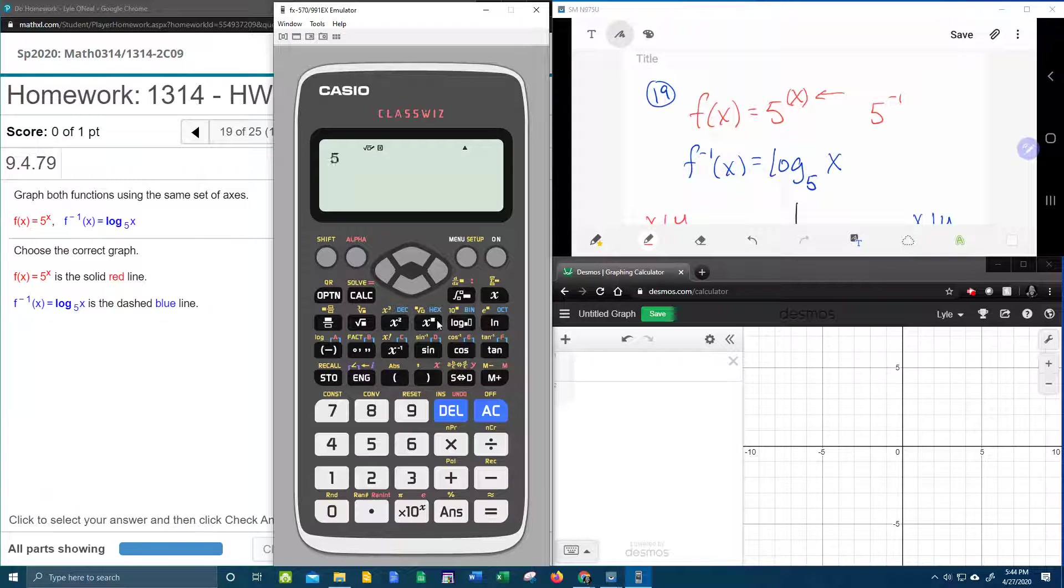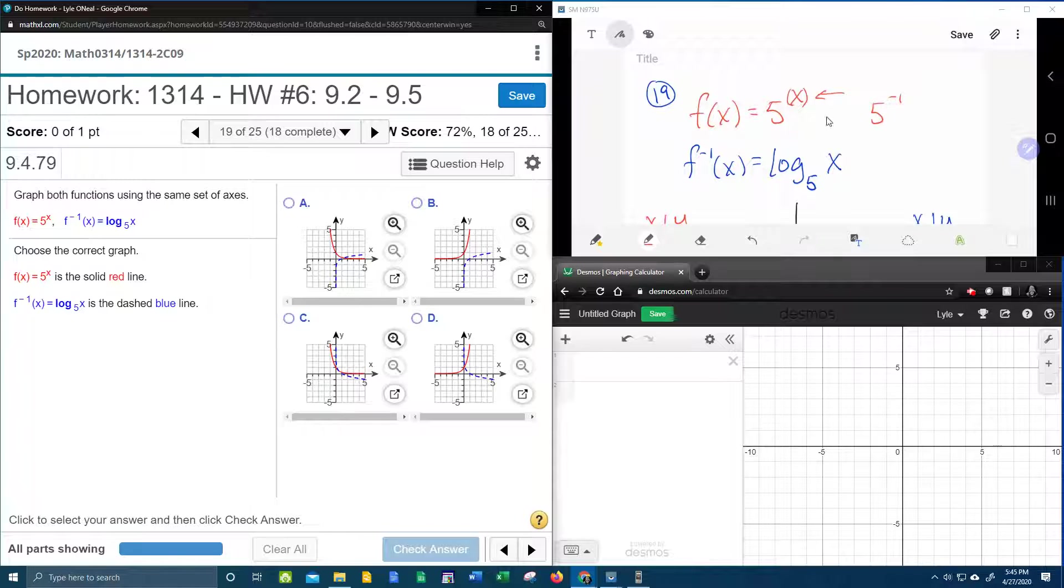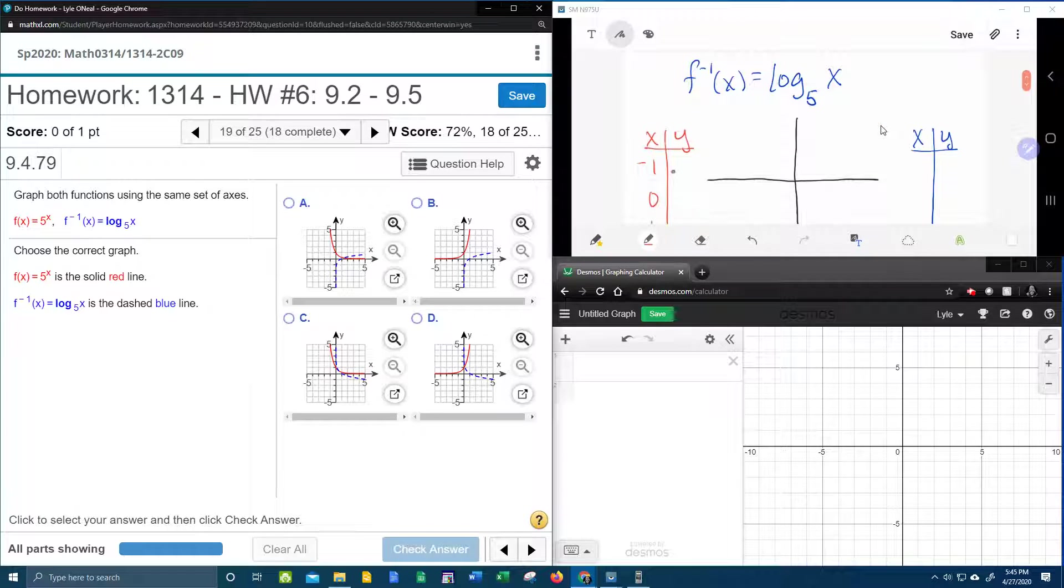and do 5 to the negative 1, it's going to give us a fraction. I'm going to have an easier time plotting a decimal, so clicking the SD button I get 0.2. So over here in this screen, we know that if x is negative 1, y is 0.2.